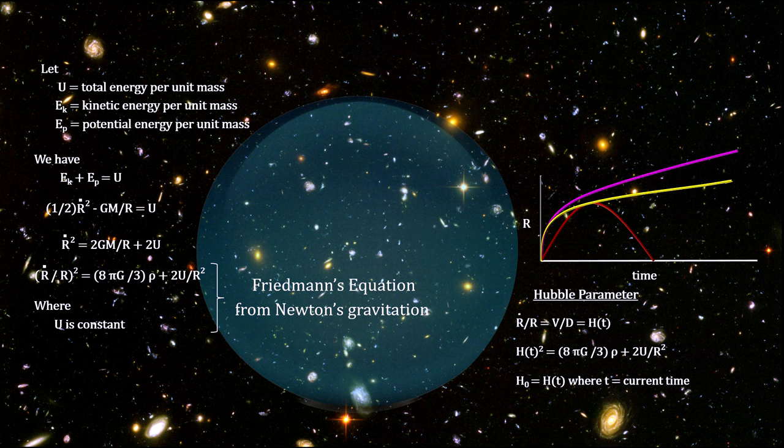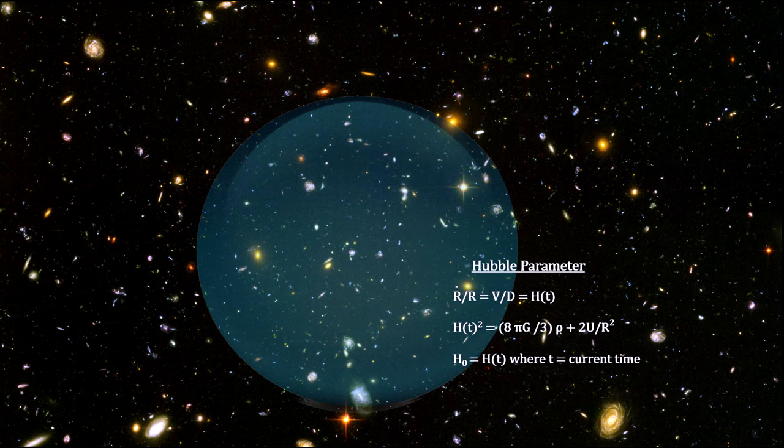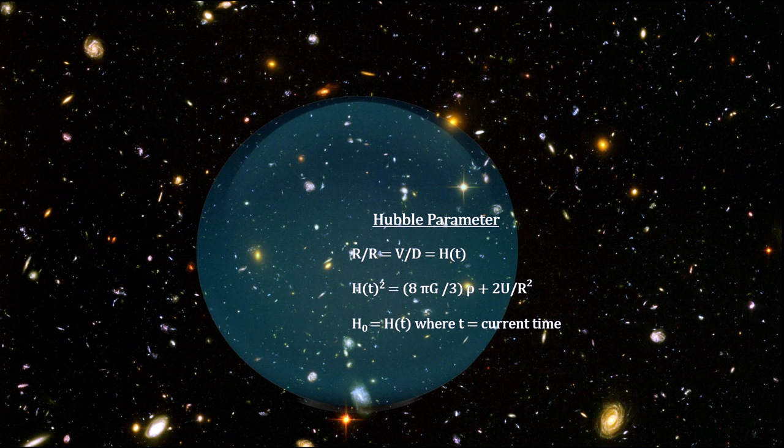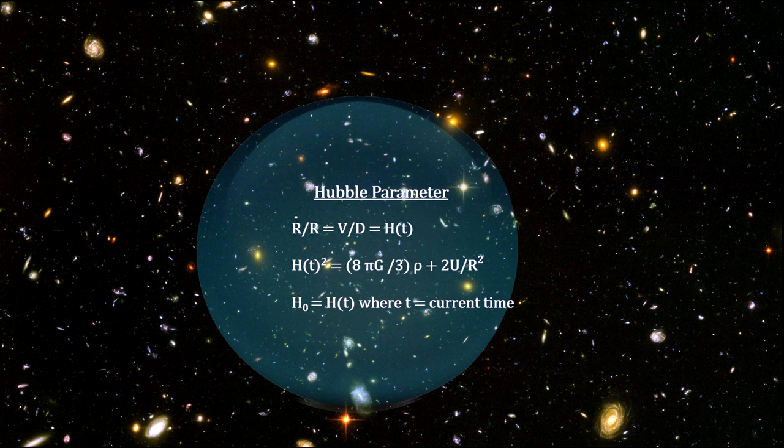Note that r dot over r is velocity over distance. This is the Hubble constant. We see that it can vary with time.